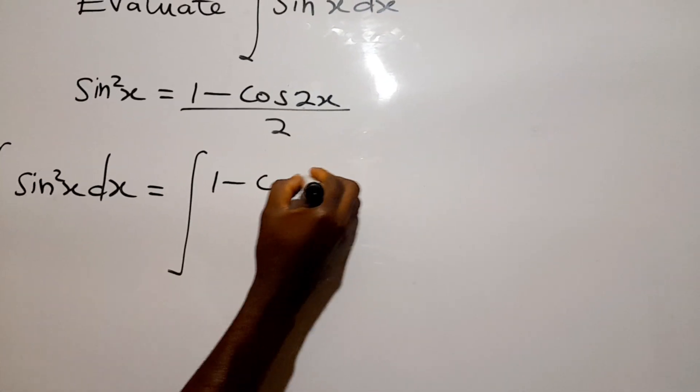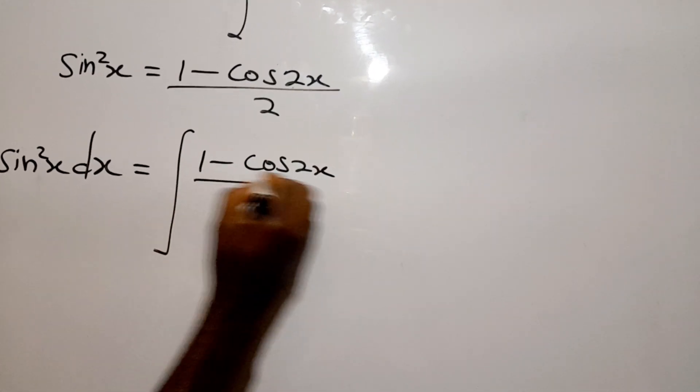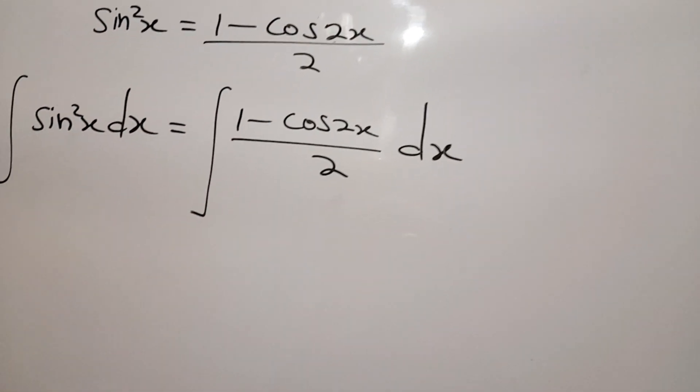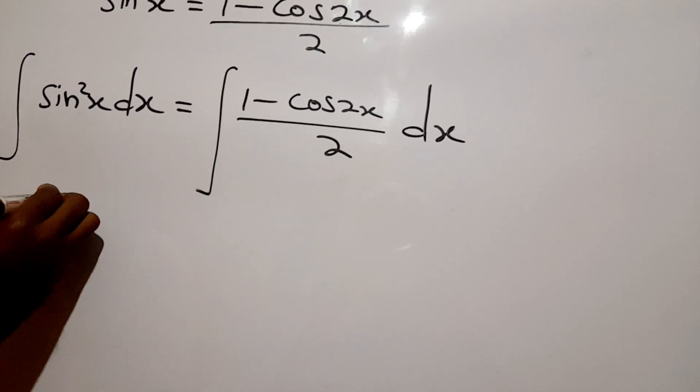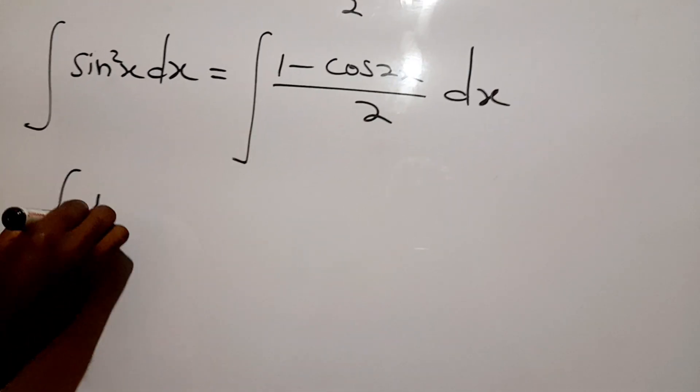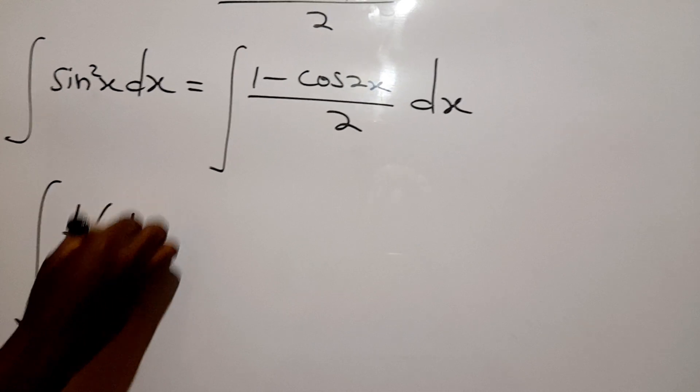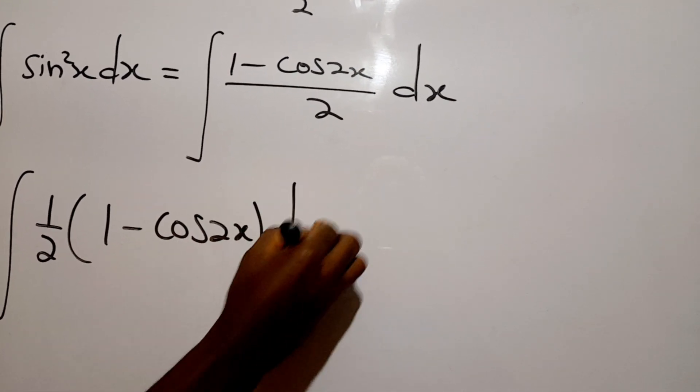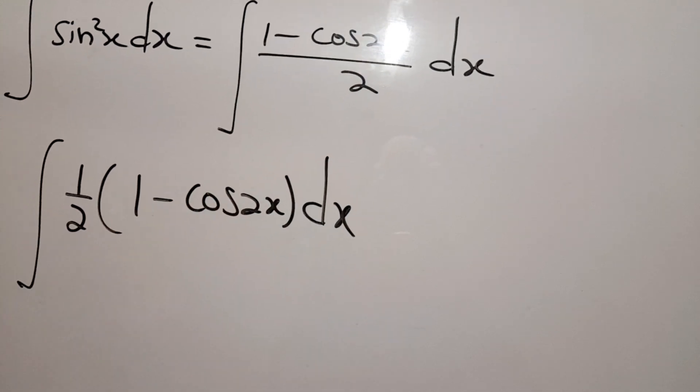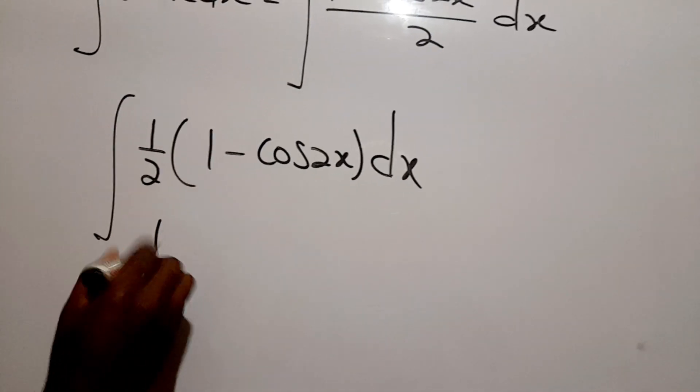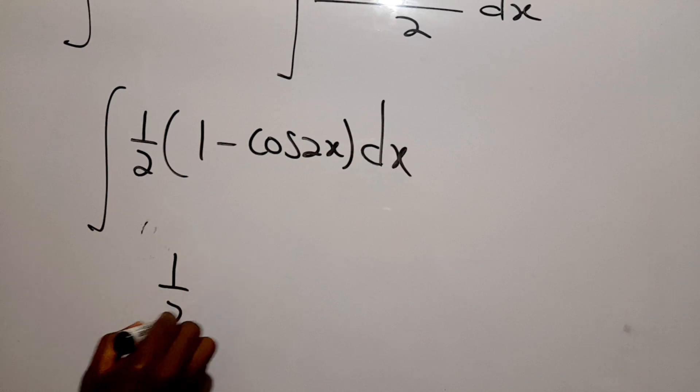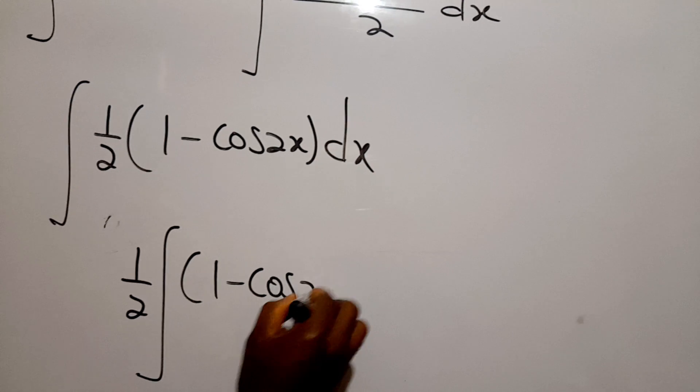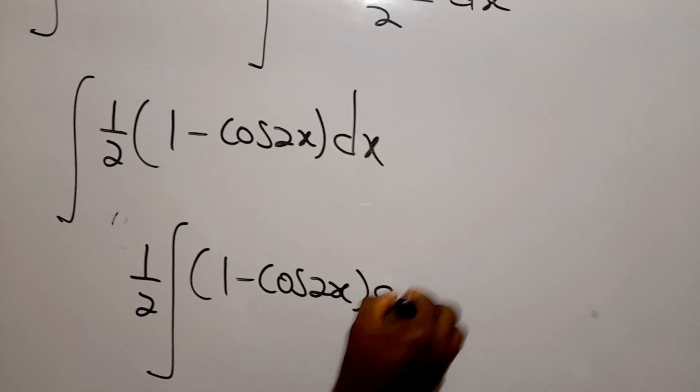In substituting, you can say the integral of sine squared x dx will be equal to the integral of one minus cos 2x all over two dx. We can rewrite this as the integral of half times one minus cos 2x dx. We can factor our constant out, so it's half times the integral of one minus cos 2x dx.